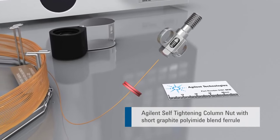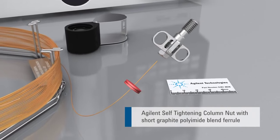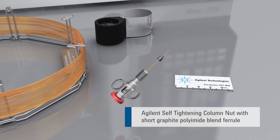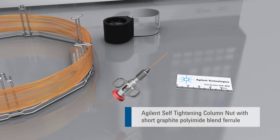Innovative self-tightening column nuts keep the seal from leaking following thermal cycling. There is no need to re-tighten fittings to fix leaks caused by the ferrule shrinking.